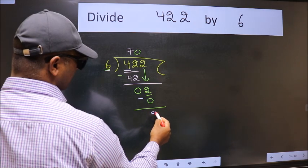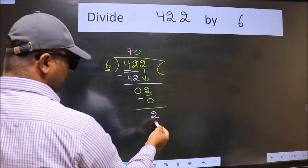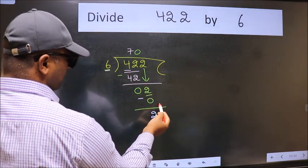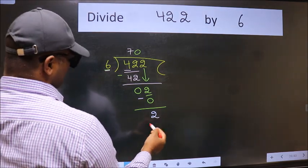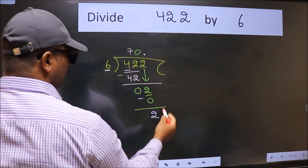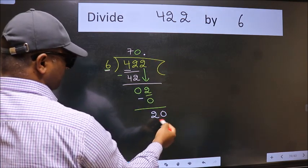Now we subtract. We get 2. Over here, we did not bring any number down, and 2 is smaller than 6. So now we can put dot and take 0. So 20.